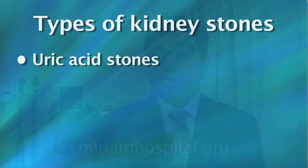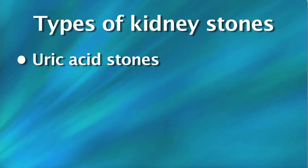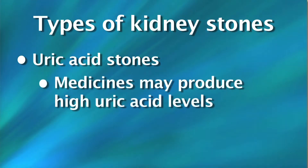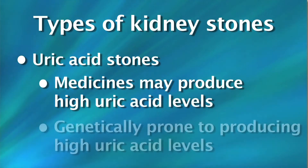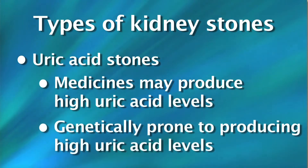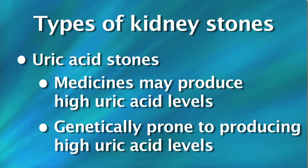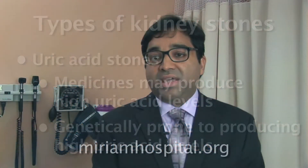Other types of stones include uric acid stones, which can occur in patients on medicines that produce high uric acid levels, or in patients who genetically produce uric acid because their urine has a low pH, and that leads to acid stones.